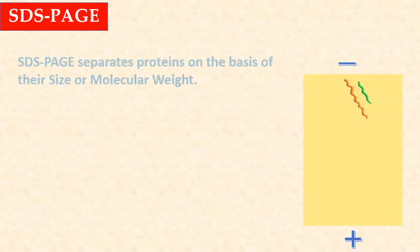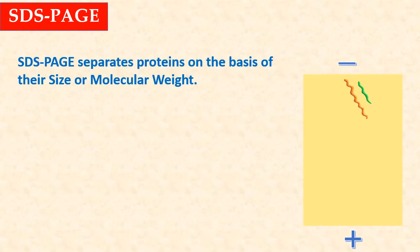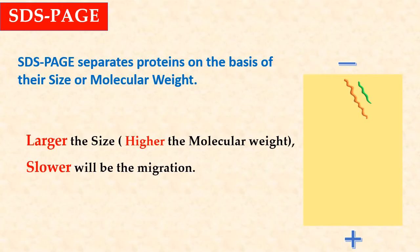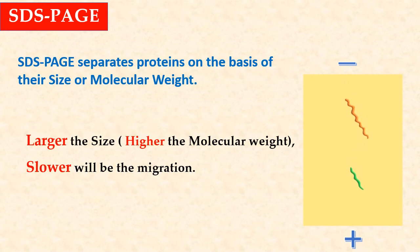So, SDS-PAGE separates proteins on the basis of their size or molecular weight. Larger the size, higher the molecular weight, and slower will be the migration of that protein molecule. And small-size proteins will migrate faster.